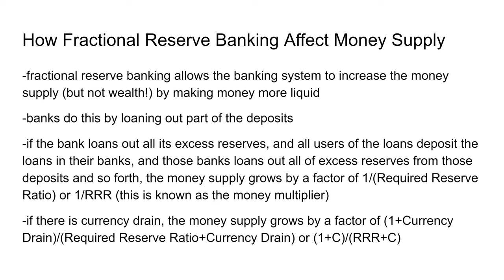If there's currency drain — where people take out money but don't deposit all of it, or banks keep excess reserves — you use the formula: (1 + currency drain) divided by (RRR + currency drain).